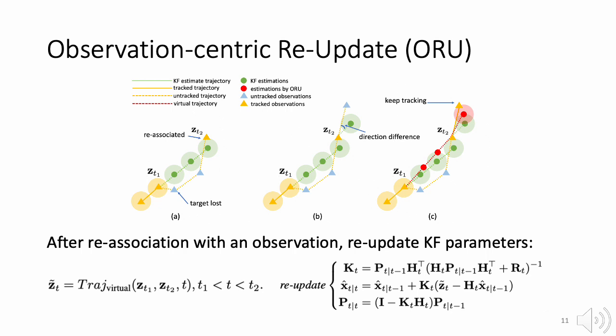Now let me introduce observation-centric re-update. In figure A, we could see that the object gets untracked at time step T1 and re-associated at time step T2.